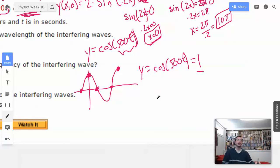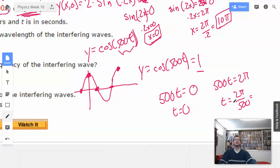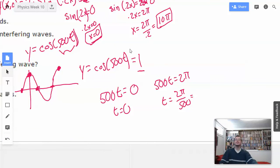So we're going to have 500t equals 0, which implies t equals 0. That's the first point. We're going to have 500t equals 2 pi. So it's the same point, 0 and 2 pi. So t will equal 2 pi over 500, which is the period, which equals 1 over the frequency.